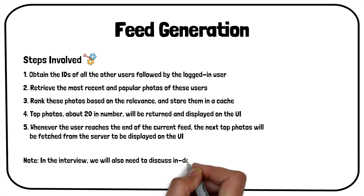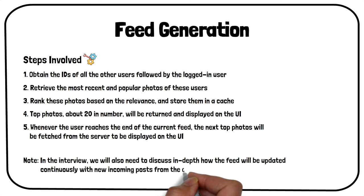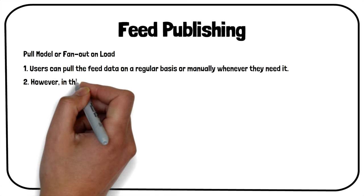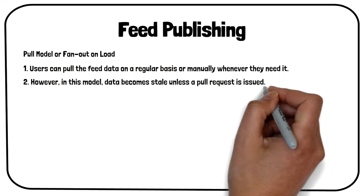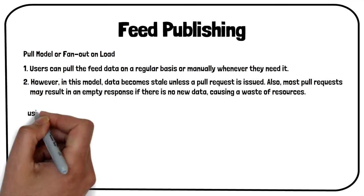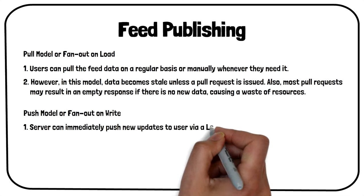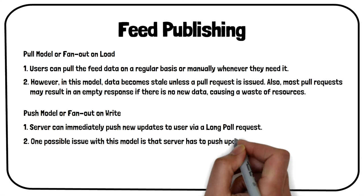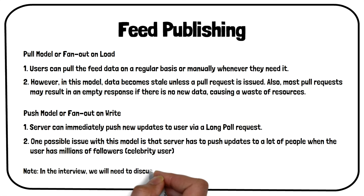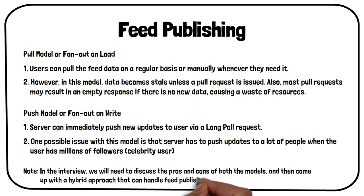In the interview, we will also need to discuss in depth how the feed will be updated continuously with new incoming posts from entities that the user follows. The second part of this problem will focus on feed publishing. There are two approaches: pull or push model. In the pull model, the user can pull the feed data on a regular basis or manually whenever they need it. However, data can become stale unless a pull request is issued, and most pull requests may result in an empty response if there is no new data, causing a waste of resources. In the push model, the server can immediately push new updates to the user via a long pull request. One possible issue is that the server has to push updates to a lot of people when the user has millions of followers, which can overwhelm our service — this is known as the celebrity user issue. In the interview, we will need to discuss the pros and cons of both models and then come up with a hybrid approach that can handle feed publishing on a large scale such as Instagram.